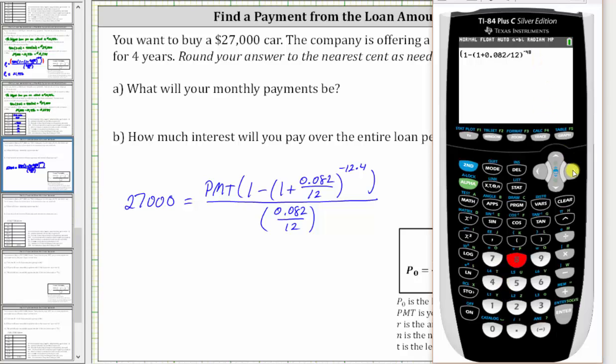We press the right arrow to exit the exponent, close parenthesis, and then divided by, in parenthesis, we have 0.082 divided by 12. And enter. So now we know this quotient is approximately 40.80481521.